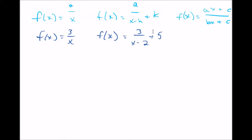That's the second example. And the third one, the most complicated, is f of x equals ax plus c over bx plus c — something like f of x equals 2x plus 5 over negative x minus 2, where there's an x on the top and on the bottom. That's how you know it's the third type.